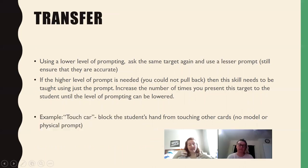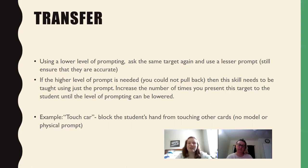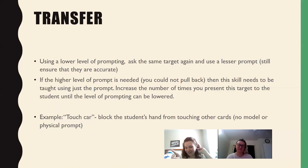For the second question — the transfer — don't shuffle the cards or switch up the materials. You're going to use a lower level of prompting and ask the same target again, still ensuring they get it accurate. In my 'touch car' example, instead of modeling, I might just block with my elbow so they're not going to touch any other cards, but I still ask the question. There are many ways to finesse a lesser prompt, but it must be lower than that first prompt.